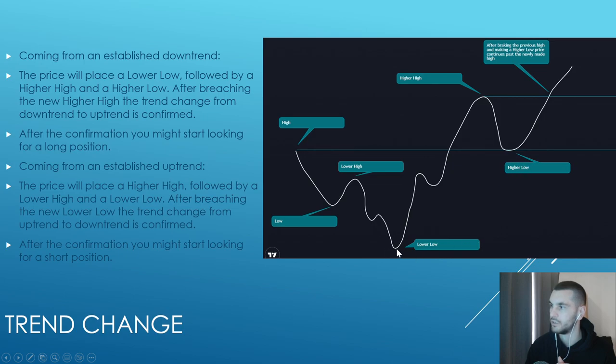You make a higher low - the higher low just has to be higher than this one. And after breaking the previous high, when you break this, this is when you change the trend. Coming from an established downtrend, the price will place a lower low, followed by a higher high and a higher low. After breaching the new higher high, the trend change from downtrend to uptrend is confirmed.